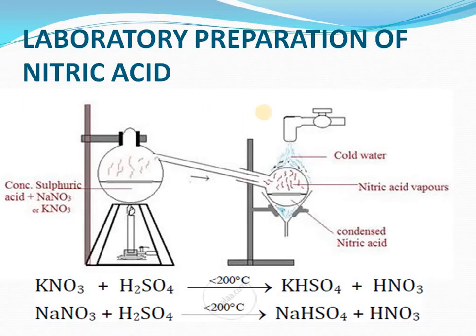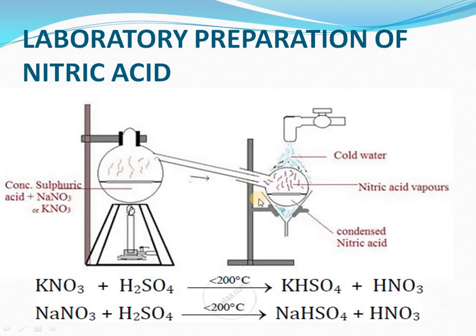In the lab preparation, we are feeding a solution containing concentrated sulfuric acid (H2SO4) and a solution of sodium nitrate or potassium nitrate — any one of these solutions we can use. On heating to a temperature less than 200 degrees Celsius, we get KHSO4 (potassium bisulfate) and nitric acid vapors. The nitric acid vapors move through the chamber towards the tilted round bottom flask, and on condensing through chilled or cold water, the vapors condense to form nitric acid. The reaction type is decomposition.